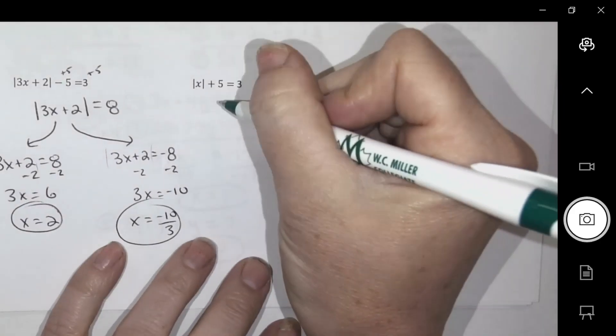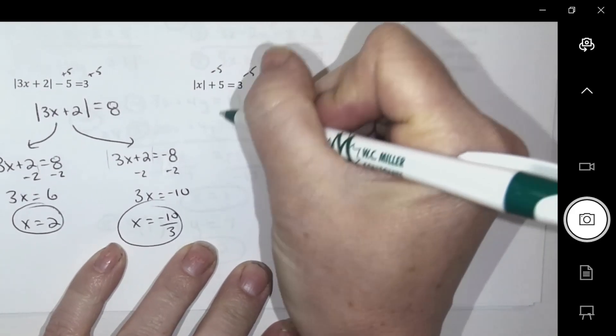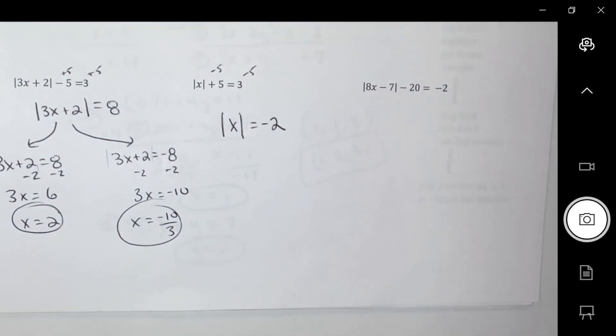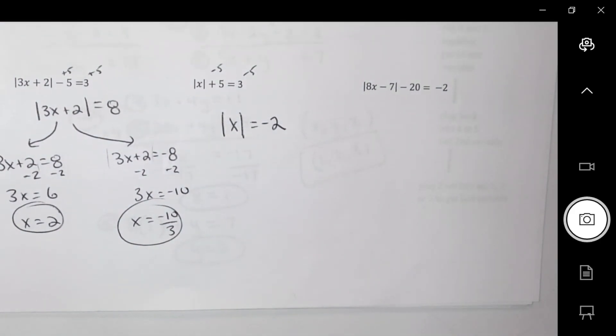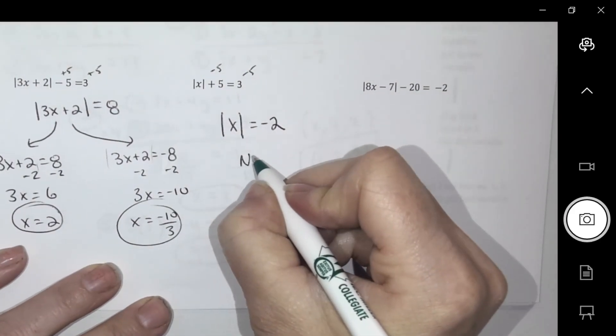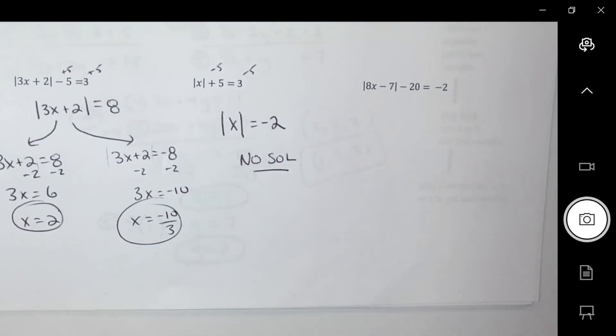Next one. I'm going to subtract 5. So what do I know about this one? There's no solution for x. What's the reason? Absolutes can't be negatives. Absolutes cannot be negatives. You can't have a negative magnitude.